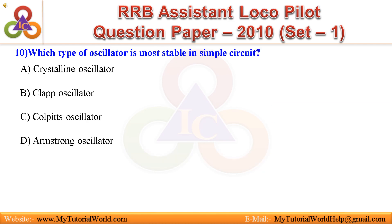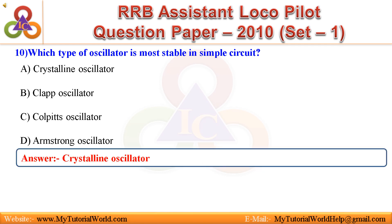Question 10: Which type of oscillator is most stable in a simple circuit? A. Crystal oscillator, B. Clapp oscillator, C. Colpitts oscillator, D. Armstrong oscillator. Answer is Clapp oscillator.